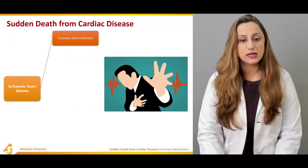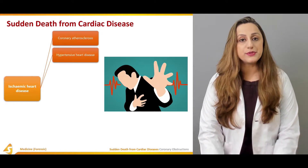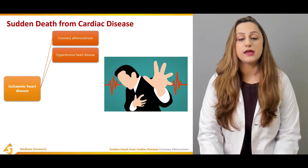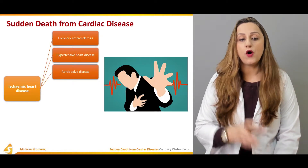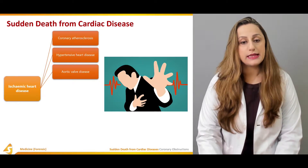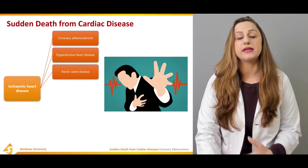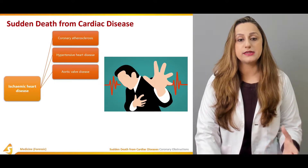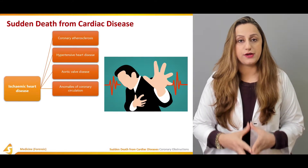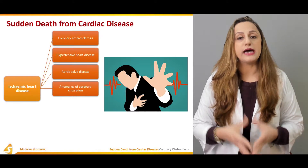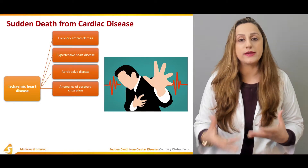Ischemic heart disease is mainly caused by coronary atherosclerosis, with hypertensive heart disease as a secondary cause. Aortic valve diseases — both genetic and acquired — are also contributing factors. Anomalies of coronary circulation are considered as well, varying across individuals, and can be congenital or acquired malformations.